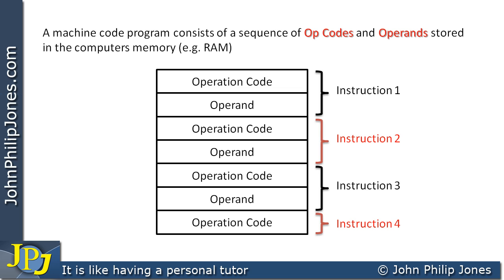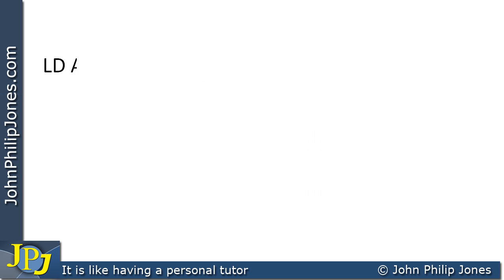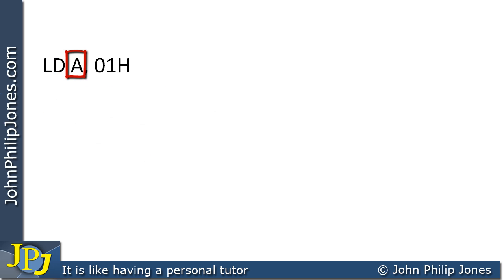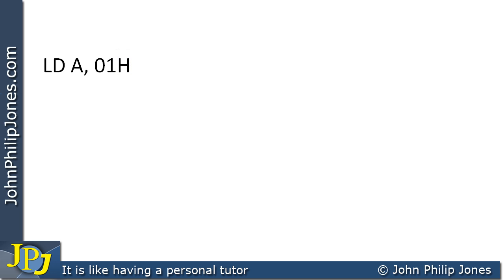Instructions 1, 2, and 3 each take up two memory locations, while instruction 4 only takes up one. Considering an individual machine code instruction, here we have an assembly language example where LD stands for load, A stands for register A inside the CPU, and 01H is the number to be loaded into register A. The H means hexadecimal. This is a language useful for human beings, but the computer must convert it into binary machine code using a program called an assembler.